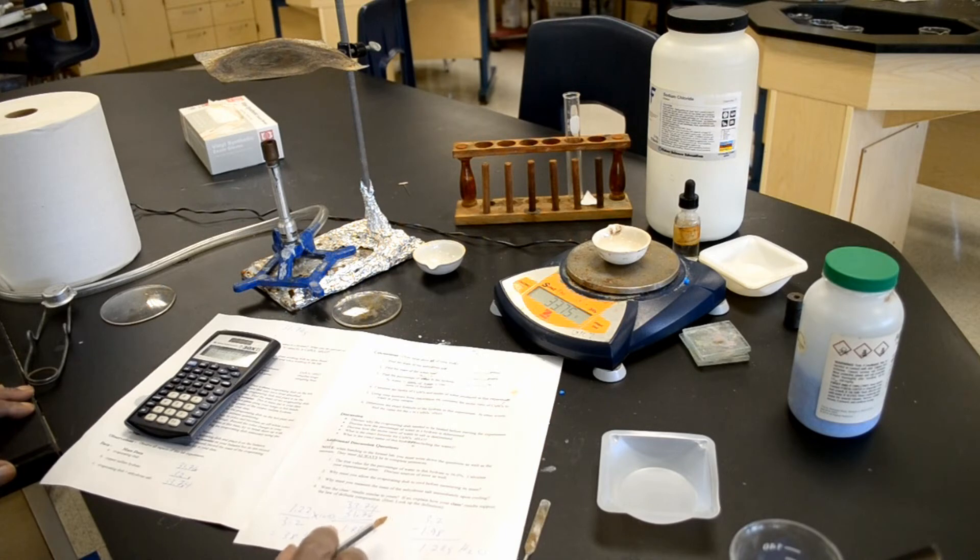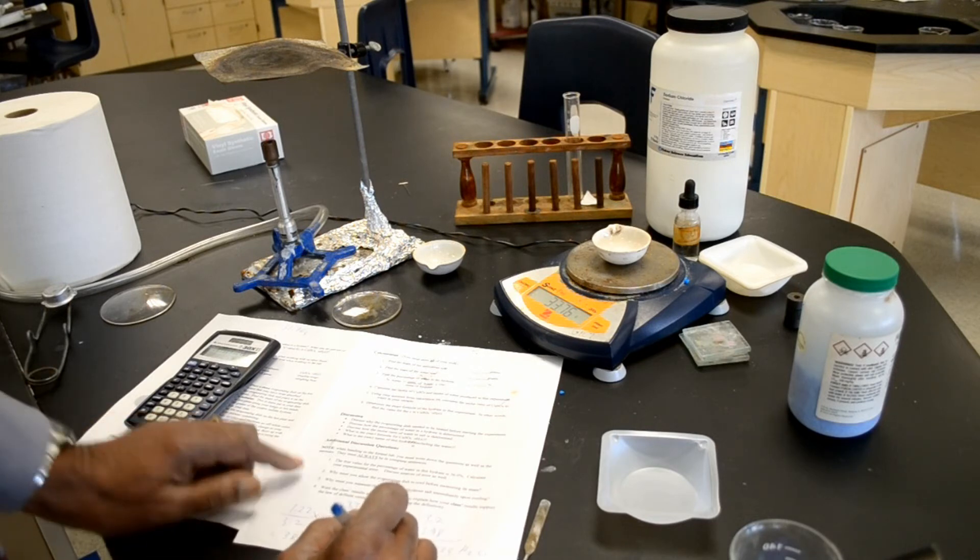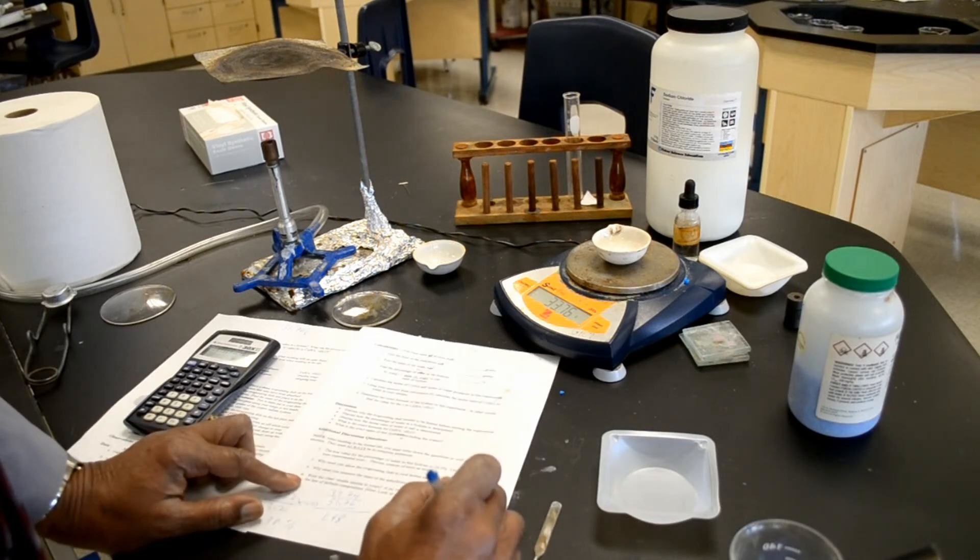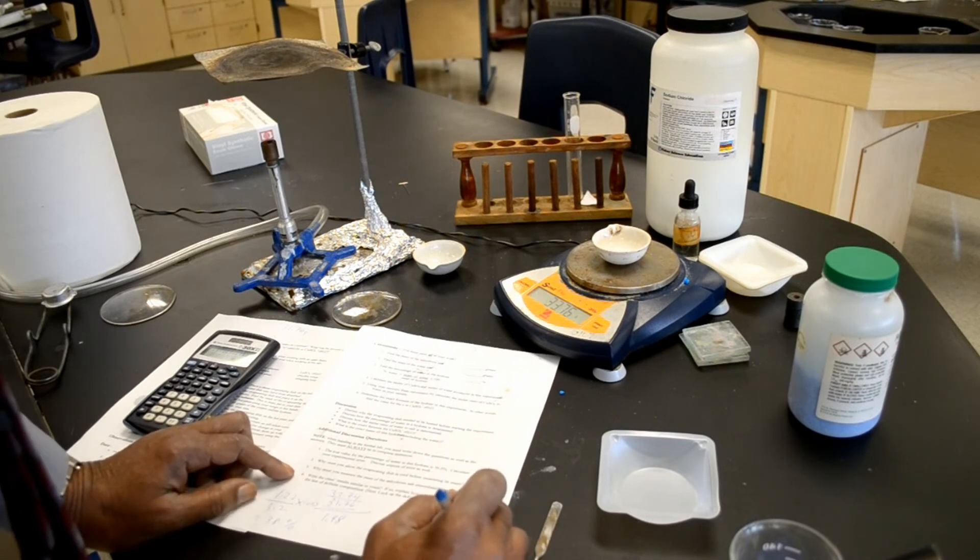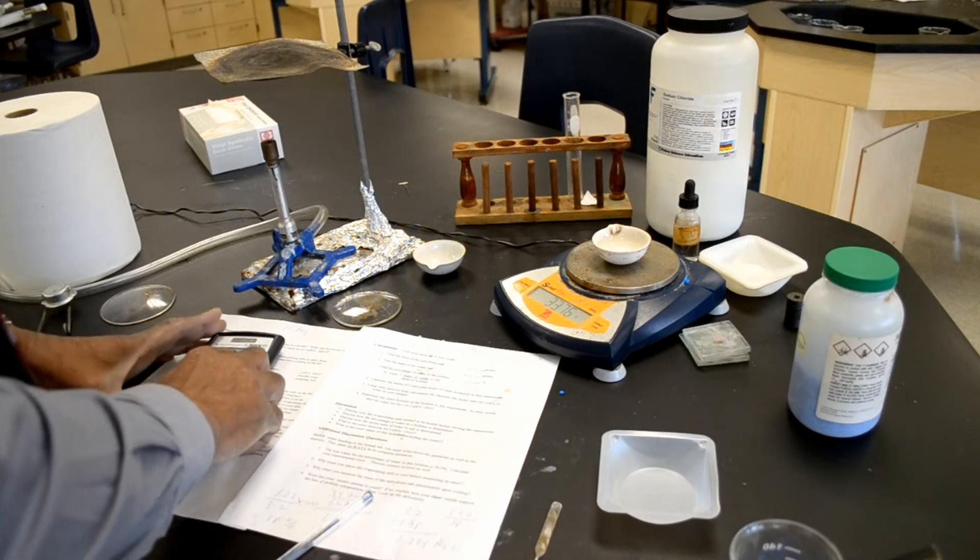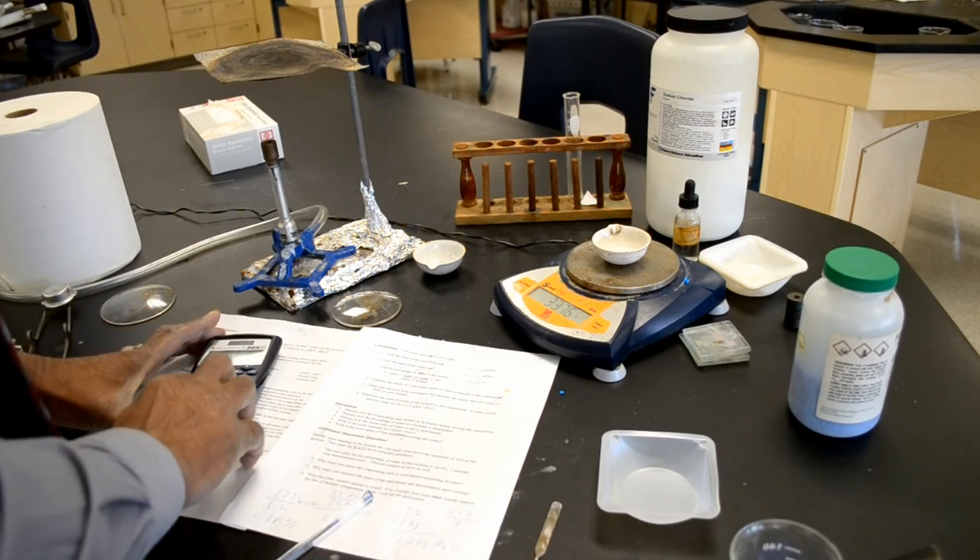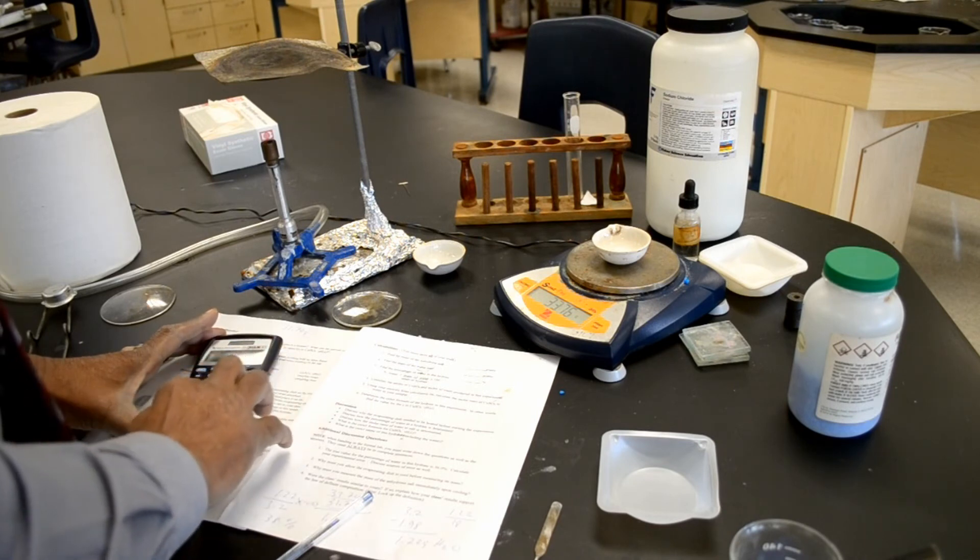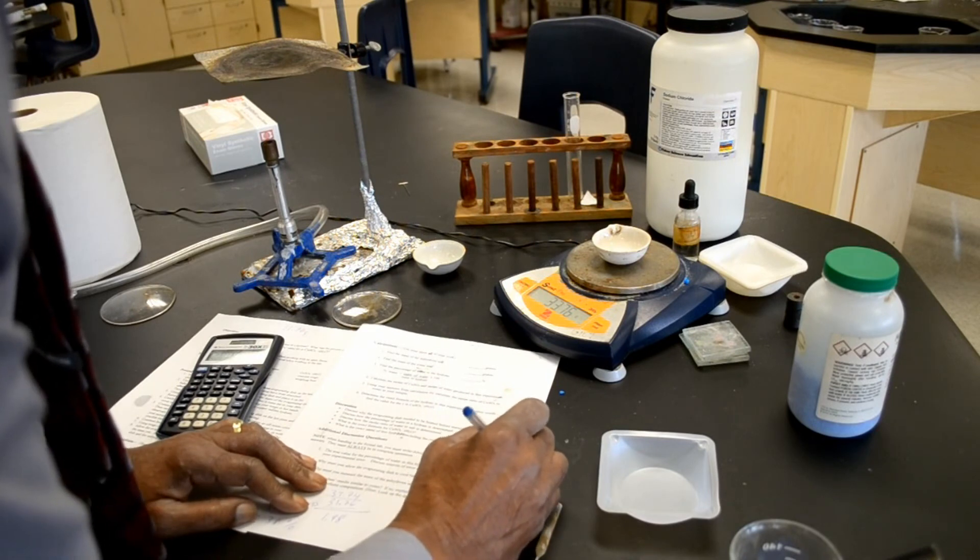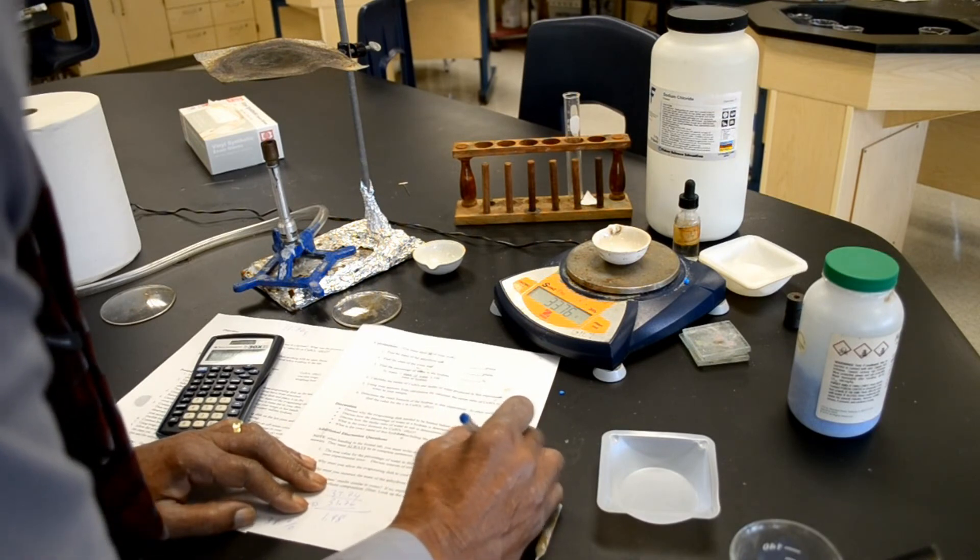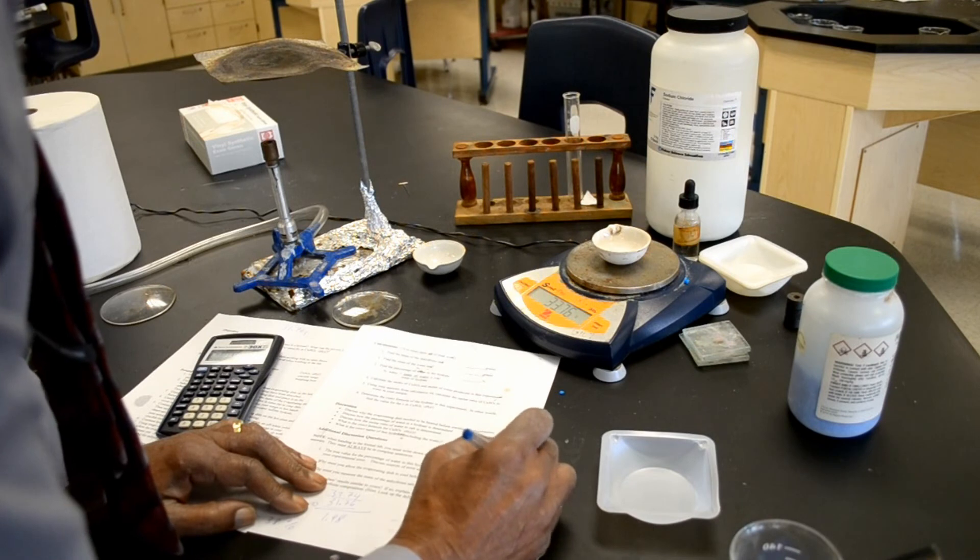To find the moles of water, I have to now divide 1.22 divided by 18. So, 1.22 divided by 18 equals 0.07 moles of water.